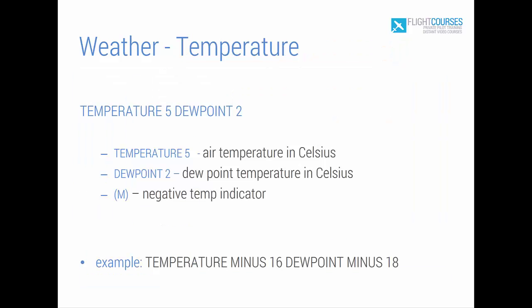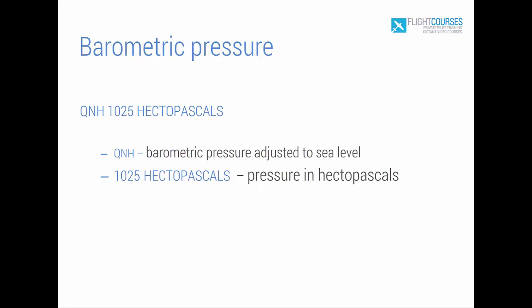Next comes temperature. We can see the current temperature at the airport and the dew point temperature. In case of negative temperature, a negative sign is added. Dew point is the temperature at which moisture in the air at current humidity precipitates or appears as water on surfaces. When the temperature and dew point are close together, it is dangerous: if temperature drops while flying, it can result in icing on the aircraft surface.